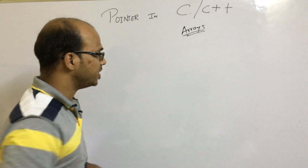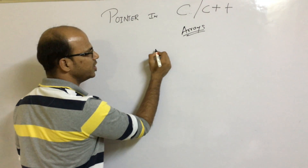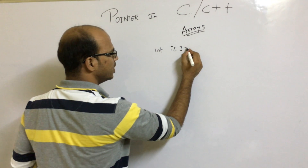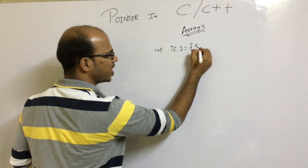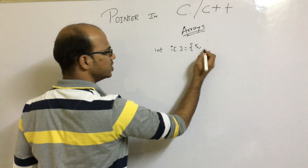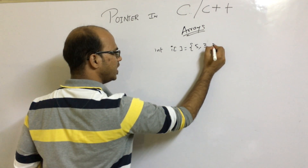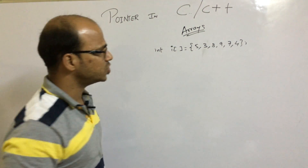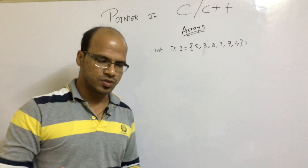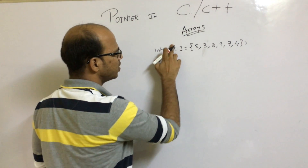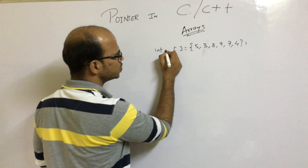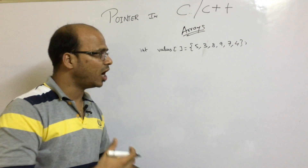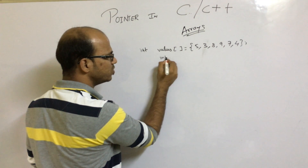Let's look at how to use pointers with arrays. We'll take an int array — let's call it 'values' — and provide the size in brackets. The elements will be: five, three, eight, nine, seven, and four. So we have six values. Normally to print these values, we'd use a loop variable I and a for loop.